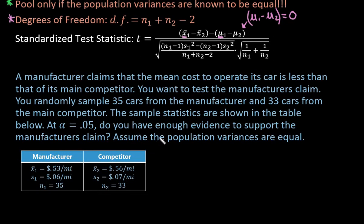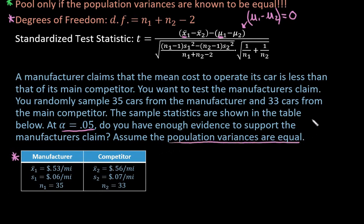A manufacturer claims that the mean cost to operate its car is less than that of its main competitor. You want to test the manufacturer's claim. You randomly sample 35 cars from the manufacturer and 33 cars from the main competitor, with sample statistics shown in the table. We want to look at alpha equals 0.05. The problem states that the population variances are equal, which tells us we should pool.